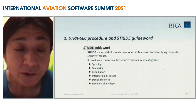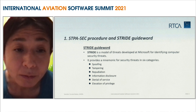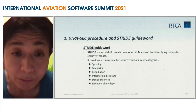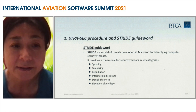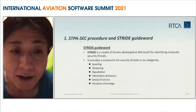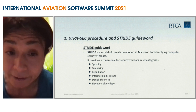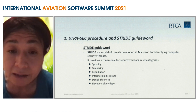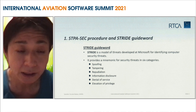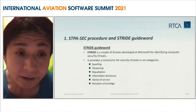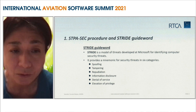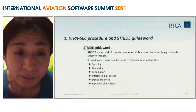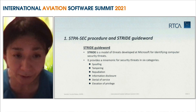I'll explain the STRIDE guide words. STRIDE is a model of threats developed at Microsoft for identifying computer security threats. It provides many security threats in six categories: Spoofing, Tampering, Repudiation, Information Disclosure, Denial of Service, and Elevation of Privilege.